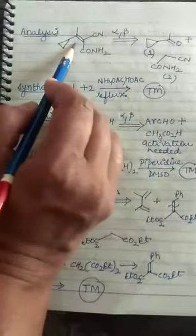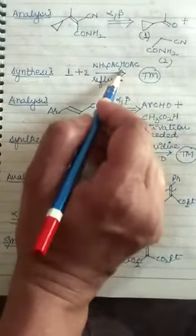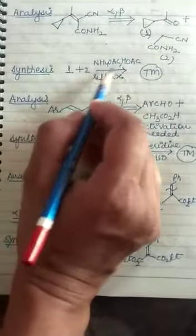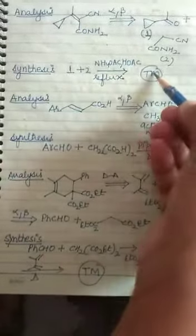Now we see the first. In the first example we do the alpha beta disconnection. And here we get the specific enolate equivalent. When these two are refluxed in the presence of acetic acid and the ammonium acetate we get our target molecule.